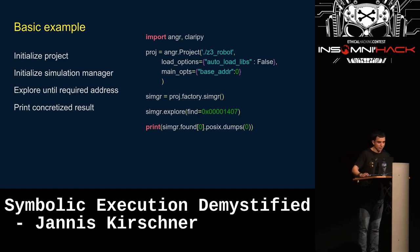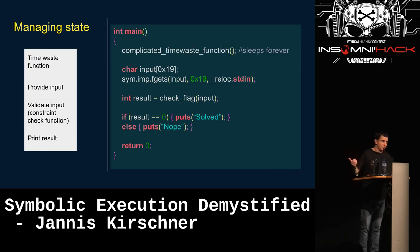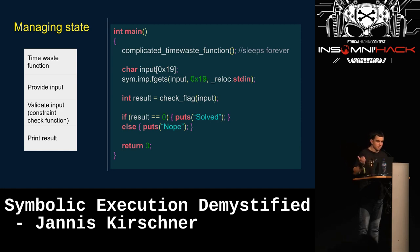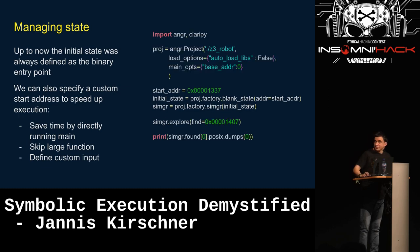That was a simple example, but sometimes it's trickier. For example, if you have a complicated time-wasting function before your actual code — lots of unrelated code, long sleep functions — we can mitigate that by adding a start address where we want to begin our symbolic execution. This is useful for bypassing time-wasting functions, bypassing libc setup functions, or if you want to define custom input.